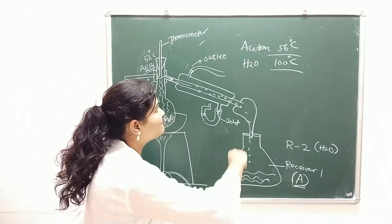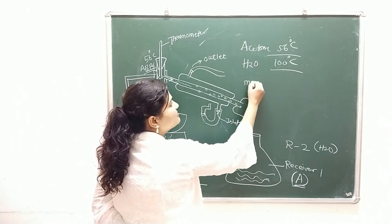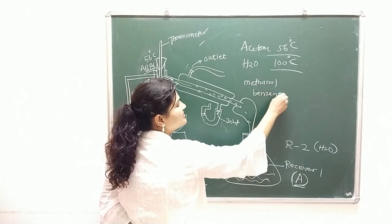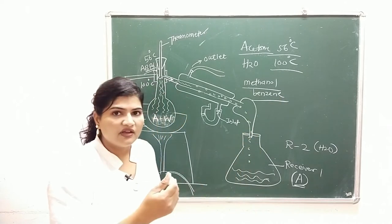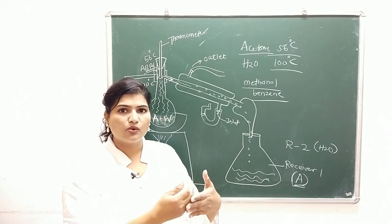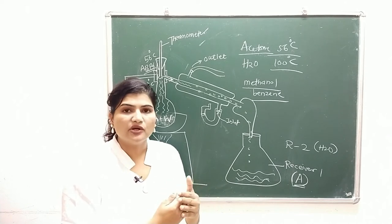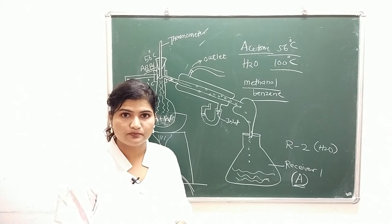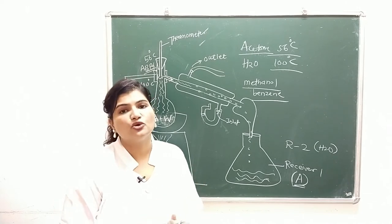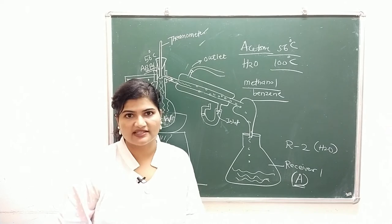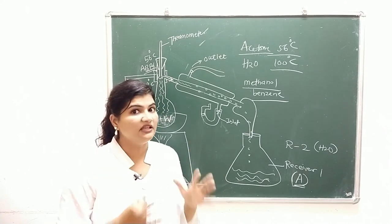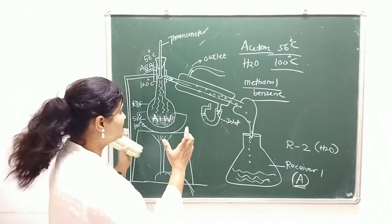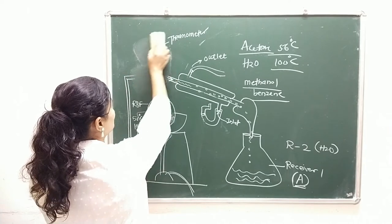But what if we need to separate acetone from methanol or acetone from benzene? All of these have very close boiling points. In that case we should go with the fractional distillation assembly. Let's discuss how fractional distillation works — I am going to modify the assembly a little bit.